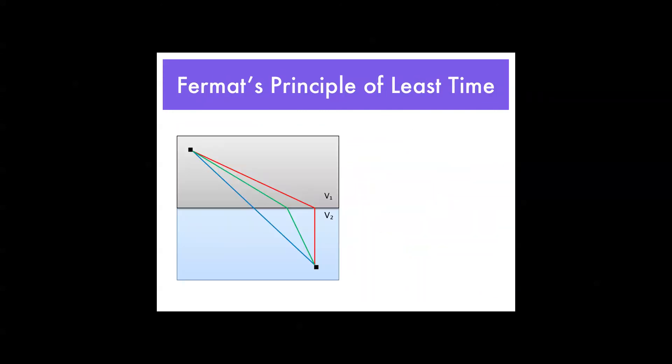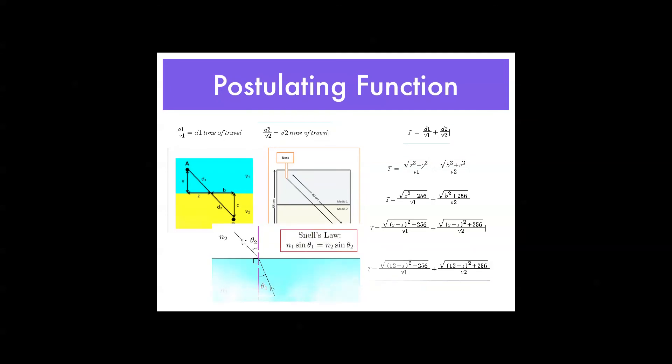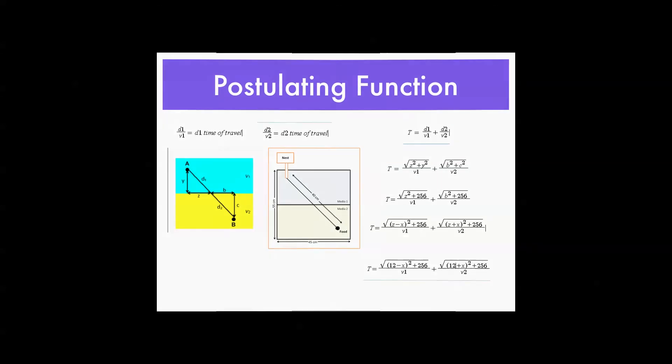Now, going back to this problem right here, one of the objectives of this experiment was to observe ants to find how accurate they are in finding the path of least time using the ant colony optimization algorithm. Now, you'll remember here, we used functions and first derivative tests and graphs and all these known values like velocity and sine and all these crazy mumbo-jumbo.